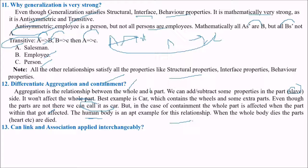But in the case of containment, the whole part is affected when the part within that got affected. Let us take a human body. Human body is an example for relationship. If you don't have a heart or if your heart is taken out, you will not be able to survive.